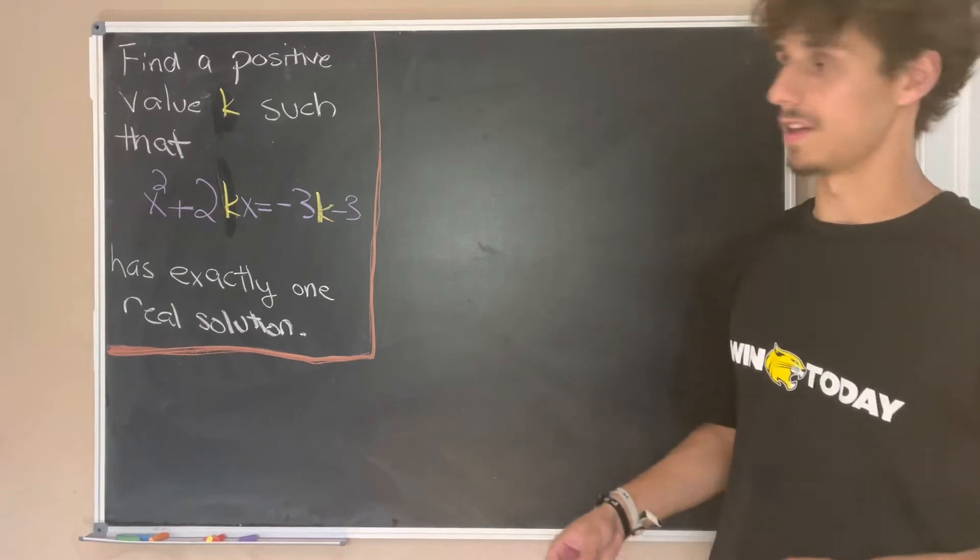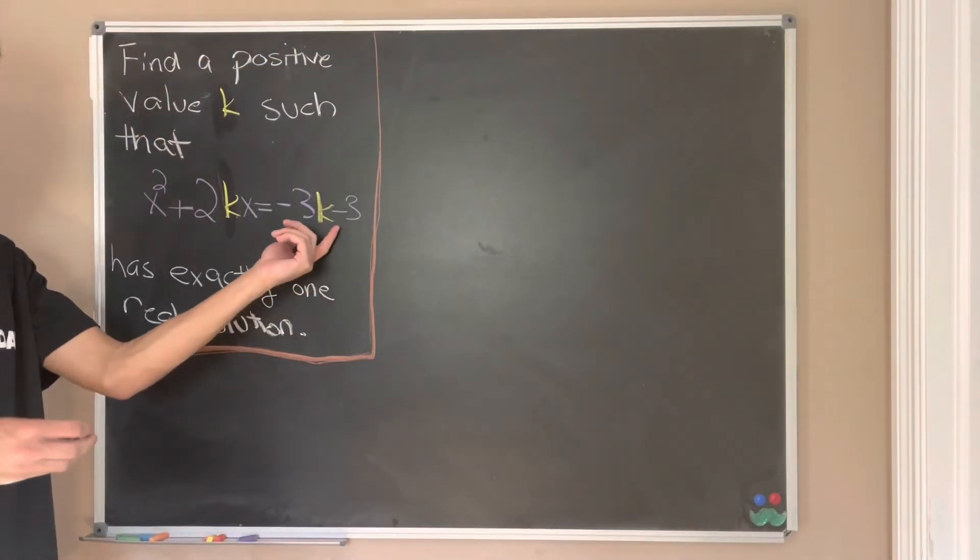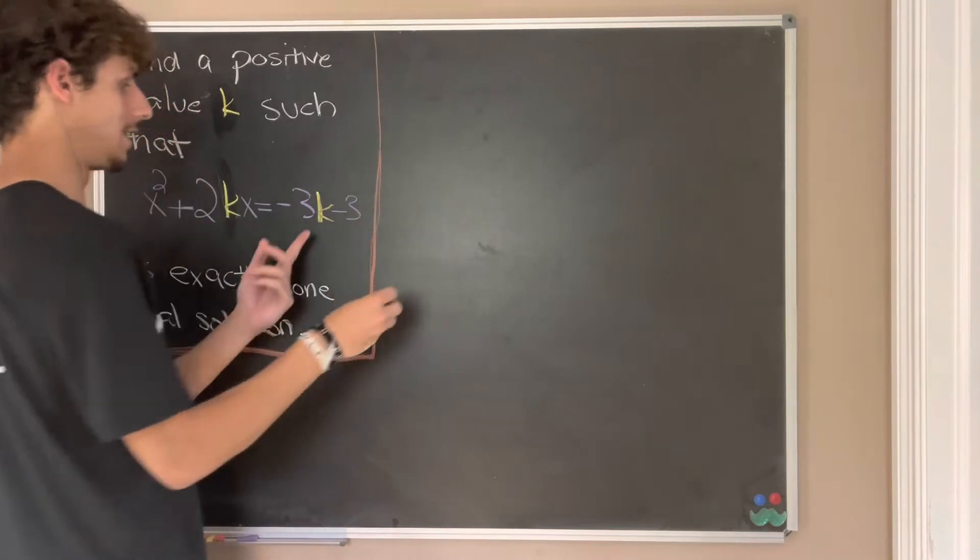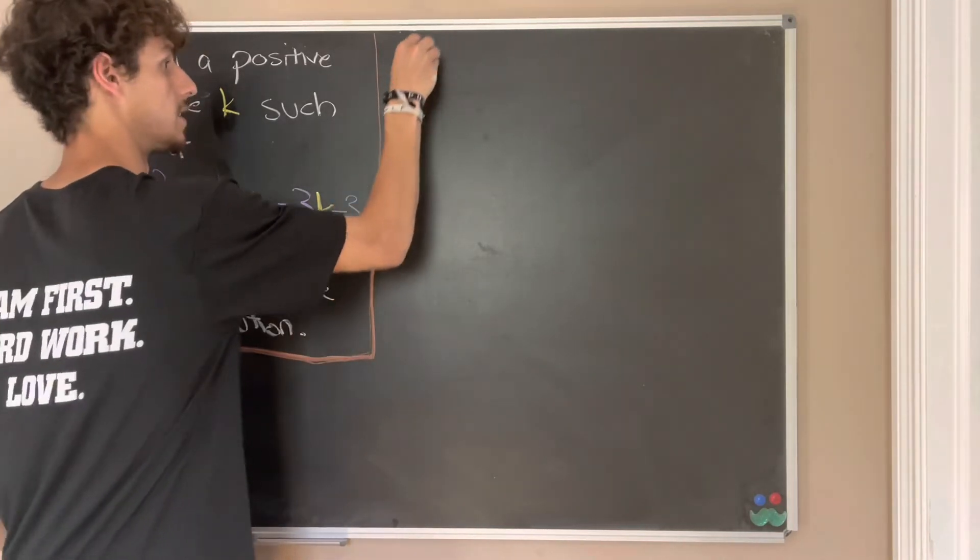So let's jump into this. First what we want to do is move this term on the right hand side over to the left hand side, leaving us with just zero on the right hand side.